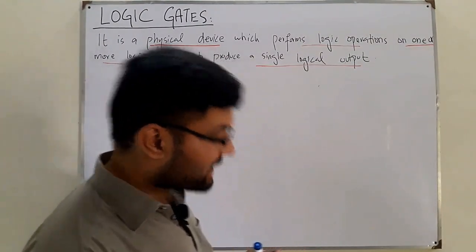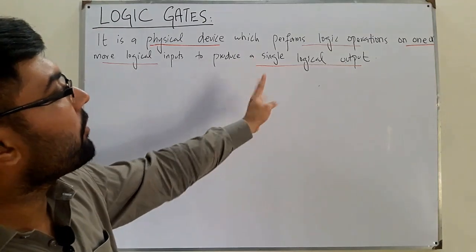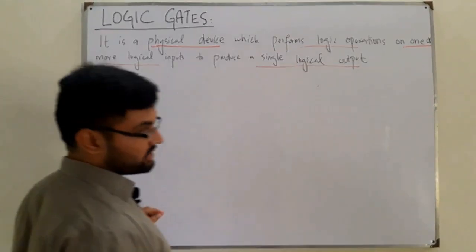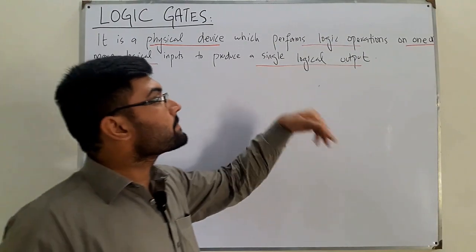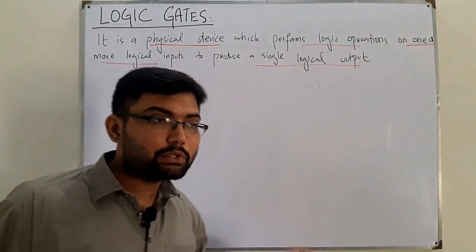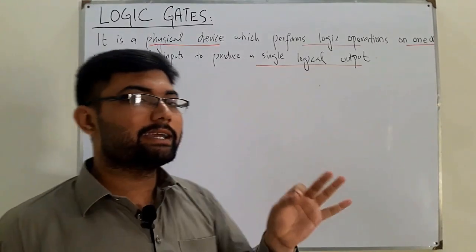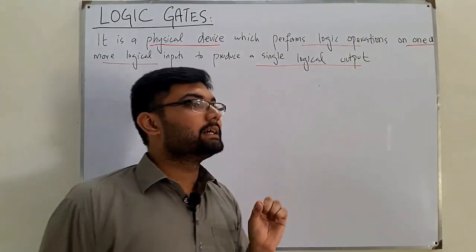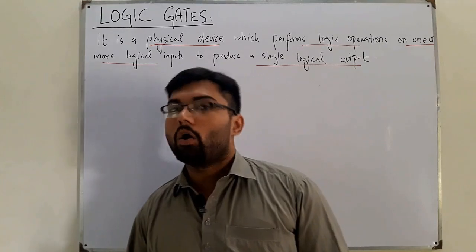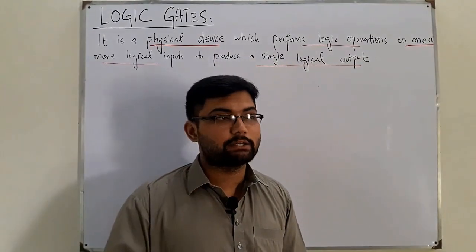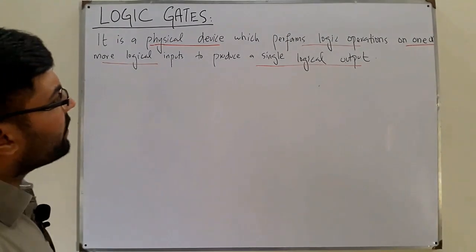So from this simple definition we get four basic points. First, it is a physical device. Second, it performs logic operations. Third, you can have one or more inputs — two, three, four, and so on. But the output is only one, and that output will be either zero (a low state) or one (a high state, or five-volt state).